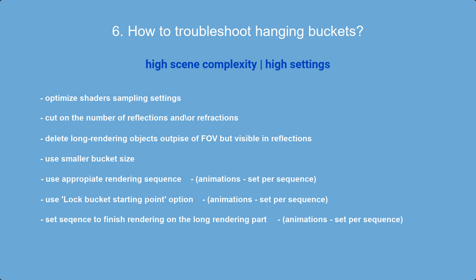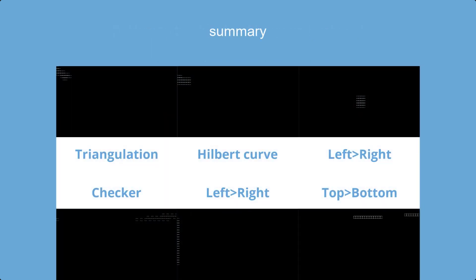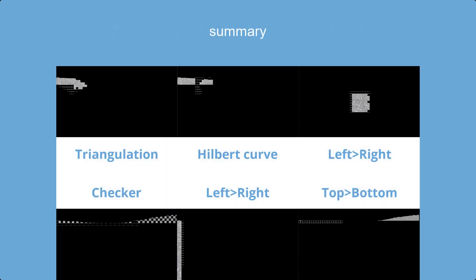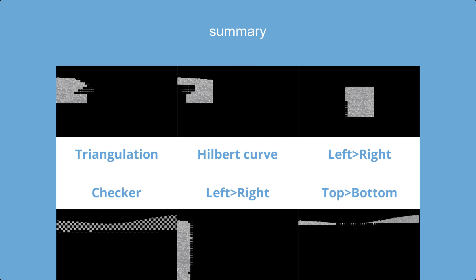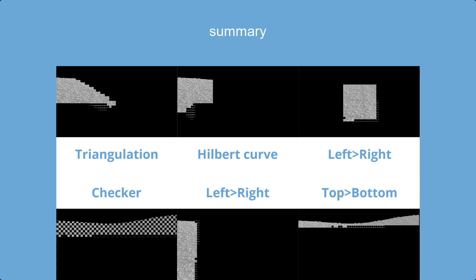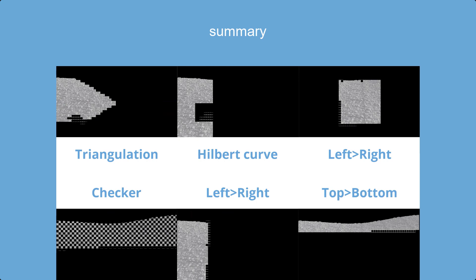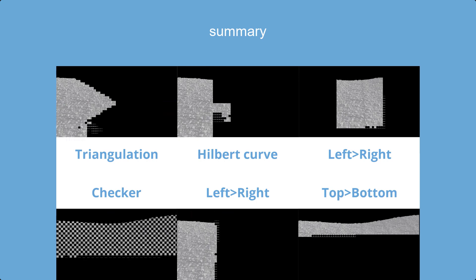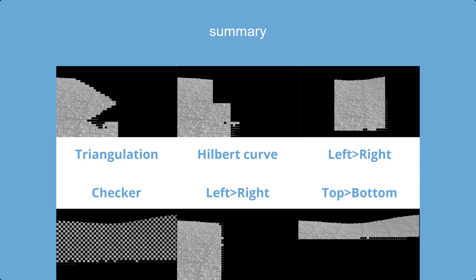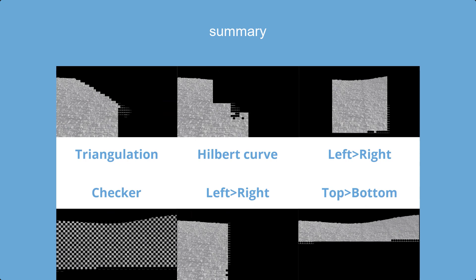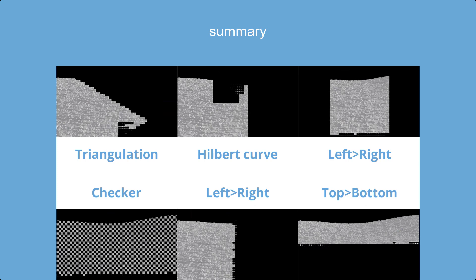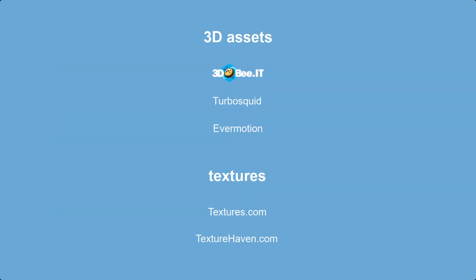In general, the rule for bucket optimization is to use buckets as large as possible while avoiding the last buckets getting stuck rendering alone. There's no universal setting for that, but these methods should help — we use them on the farm for troubleshooting with success. Thank you for watching; I hope this tutorial is useful. Bye and happy rendering!